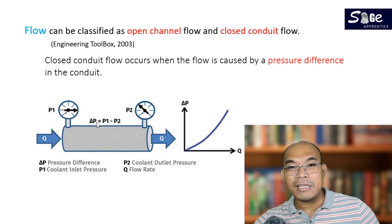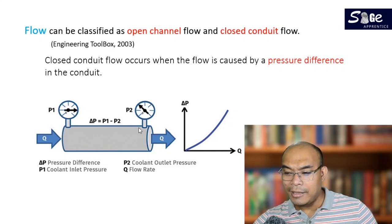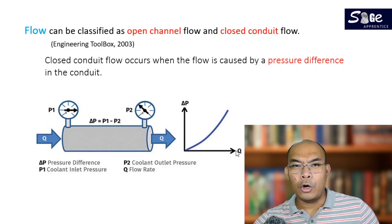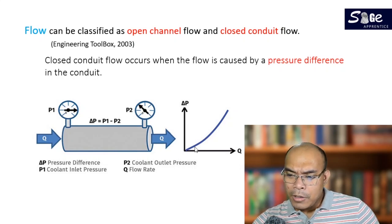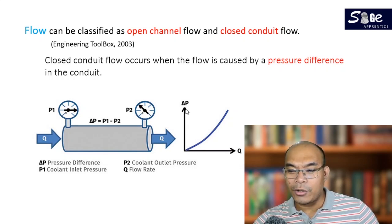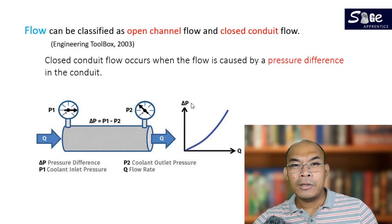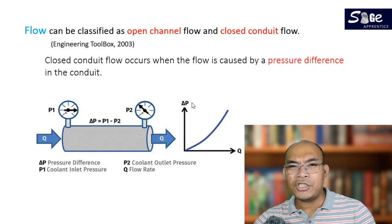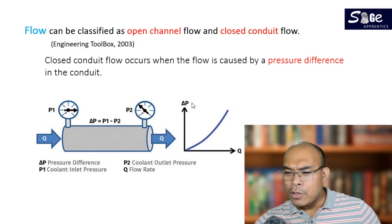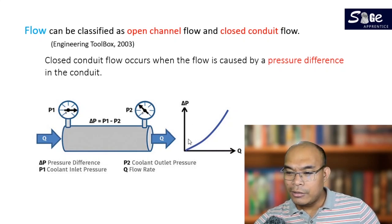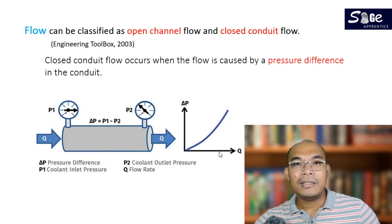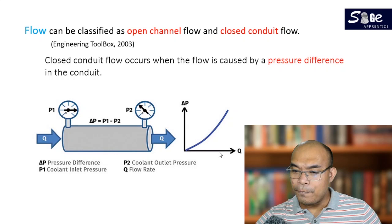The difference between the two pressures is indicated by delta P, where delta P is equal to the pressure at the inlet minus the pressure at our outlet. The relationship, as indicated in this graph, is directly proportional. Although it is not linear, if there is an increase in the differential pressure — delta P indicating differential pressure, meaning the difference between two pressure measurements — the higher the differential pressure, the higher the flow rate, or the higher the Q.